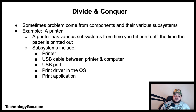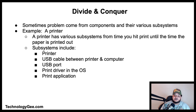Another technique to consider is divide and conquer. Sometimes problems involve components across various subsystems. Take a printer, for example — from when a user hits print to when the document comes out, subsystems include the printer itself, the USB cable, the USB port, the print driver in the OS, and the application. Check if the printer is on and has ink or toner, then check the USB cable, then move on to the next subsystem until you isolate the problem. This systematic approach is the divide and conquer technique.